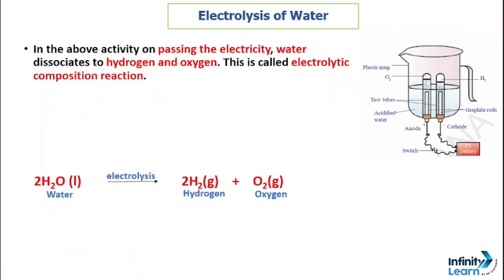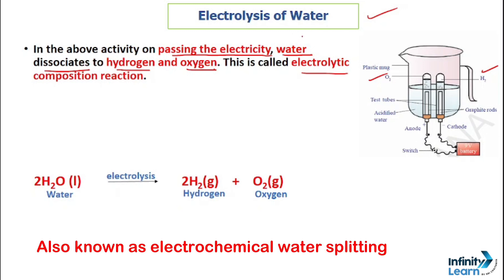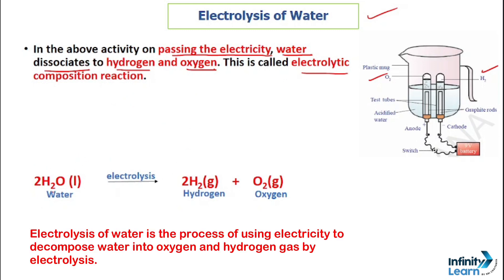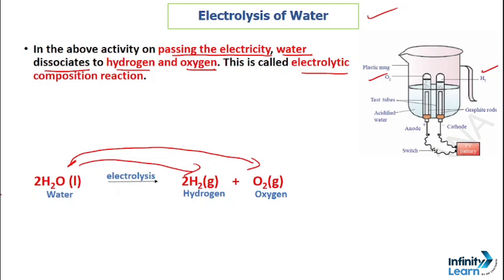As we pass electricity through water, it dissociates into hydrogen and oxygen — this is called an electrolytic decomposition reaction. Electrolysis of water is also known as the electrochemical water splitting technique. In electrolysis of water, we use electricity to decompose water into oxygen and hydrogen gas, and this whole process is known as electrolysis of water. Here is the chemical reaction showing water dissociating into hydrogen and oxygen.